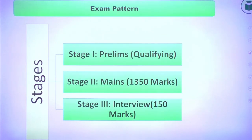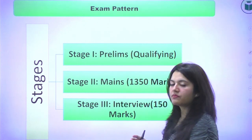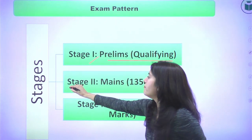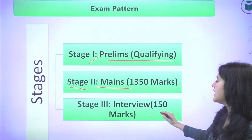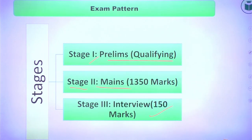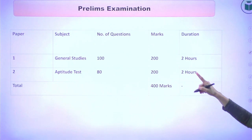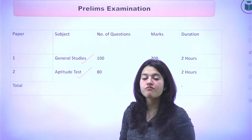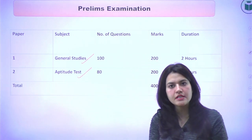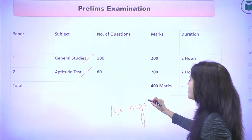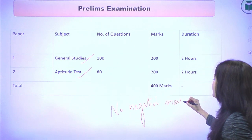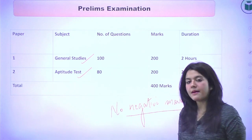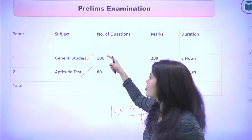Now let's look at the broad exam pattern. There are three stages: stage one is the preliminary examination, stage two is the mains, and stage three is the interview test. The prelims are divided into two parts: one GS paper and one aptitude test. There is no negative marking in the prelims.